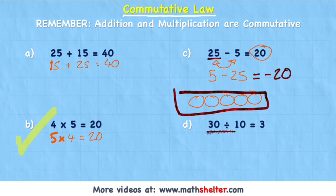And again, with division, 30 divided by 10 equals 3. But if I flip that around and have 10 and I try and share 10 between 30, I'm going to get a totally different answer.